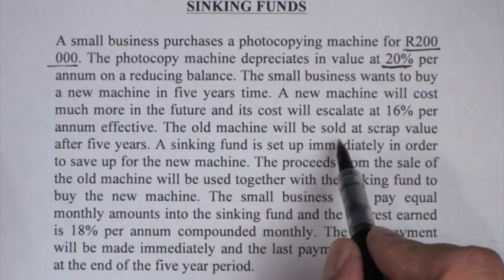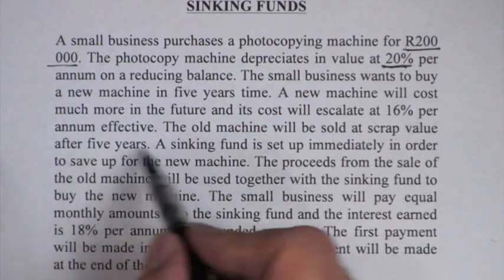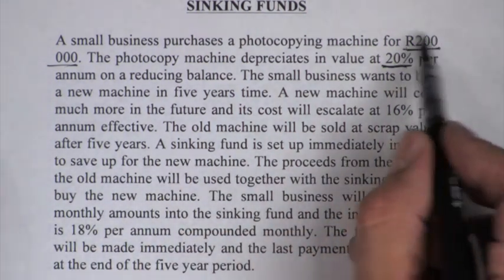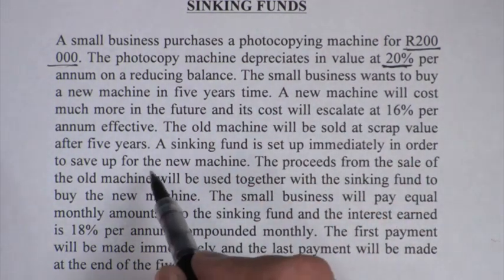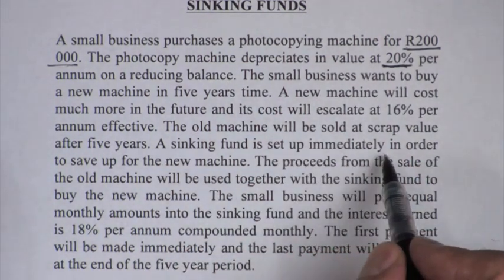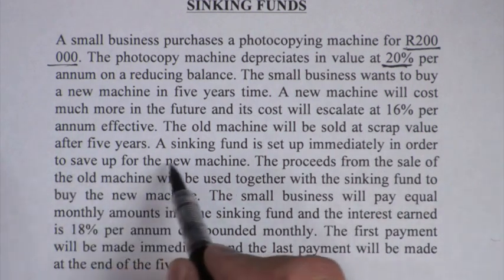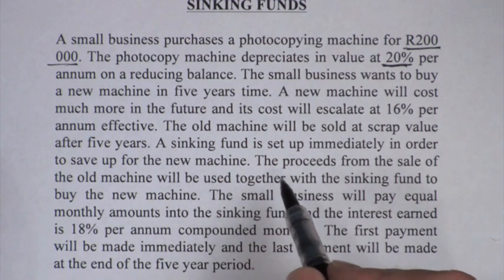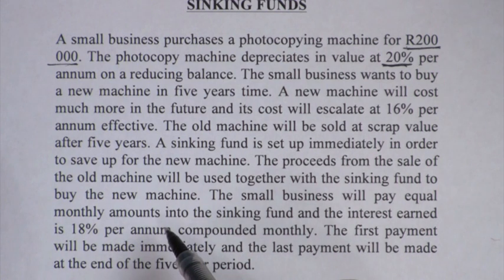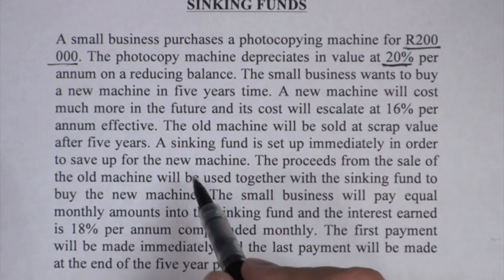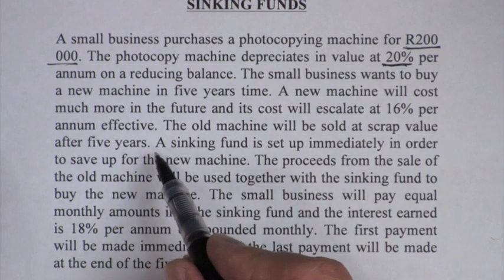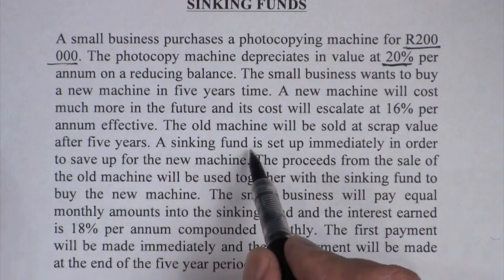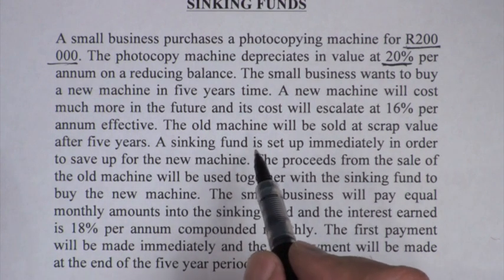The old machine will be sold at scrap value after five years. A sinking fund is set up immediately in order to save up for the new machine, because there is going to be a shortfall. If they sell that old machine which depreciates, and the new machine increased in price, they will need money. So they are going to set up a sinking fund — this word is just an interesting term for this specific purpose.